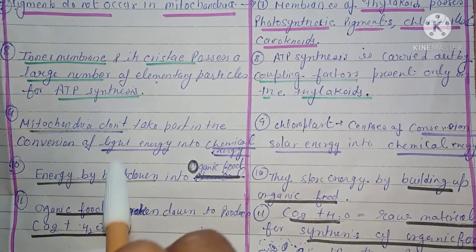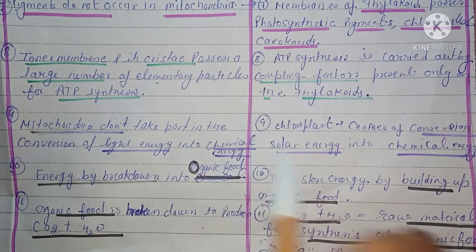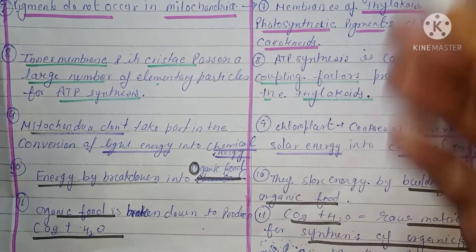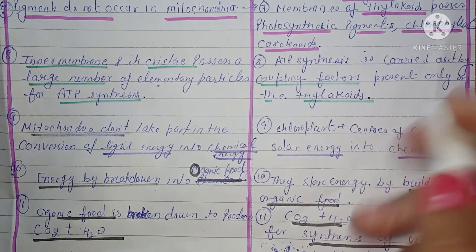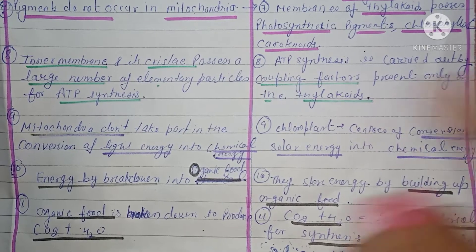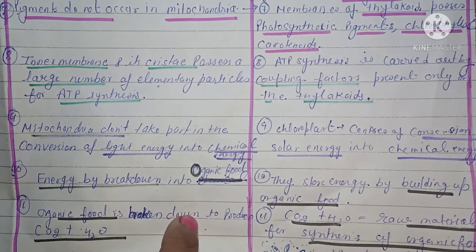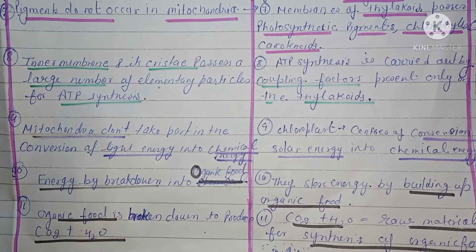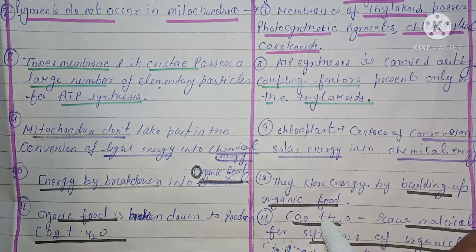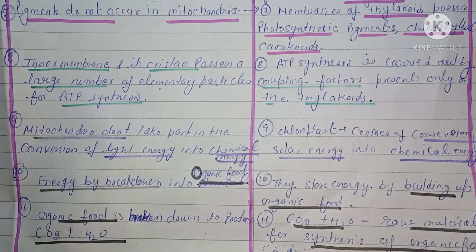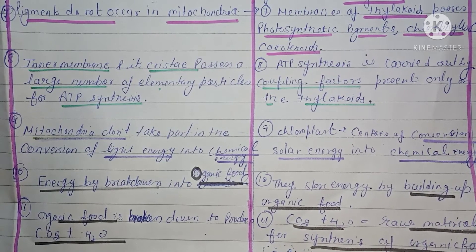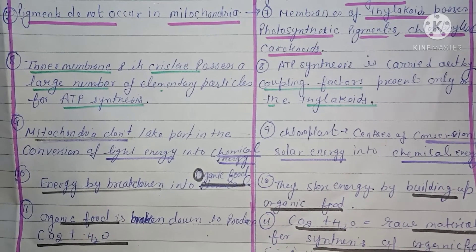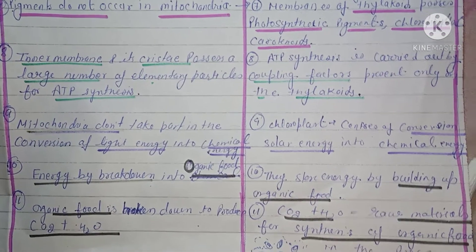Mitochondria organic food ko break down karta hai — carbon dioxide aur water mein. Chloroplast store energy se organic food material ki formation karta hai. Chloroplast carbon dioxide aur water ko raw material ki tarah use karke photosynthesis ke process mein organic food synthesize karta hai.